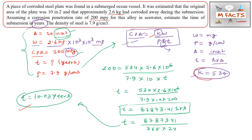So t is approximately 10 years for this question. One more reminder: when calculating CPR in mm per year, remember to change both the k value to 87.6 and the area unit to centimeter squared. You can work in either unit system as per your convenience. This topic is very important for GATE Metallurgy or any exam related to metallurgical engineering.